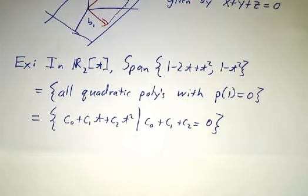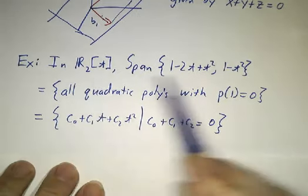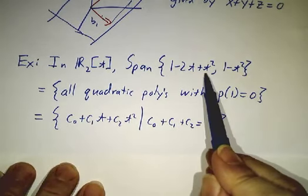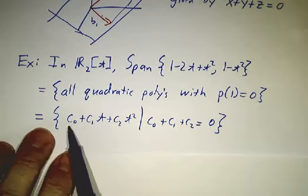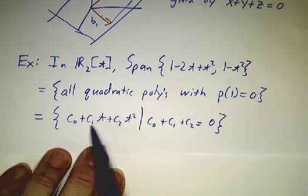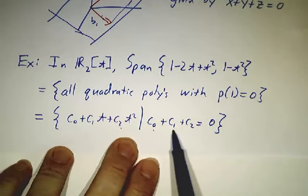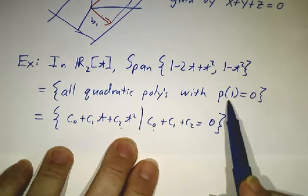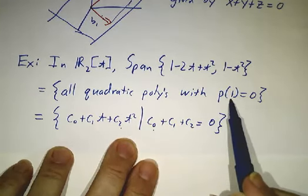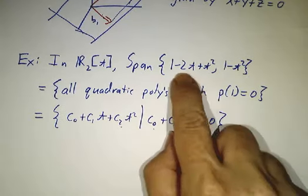We could do the same thing in an arbitrary vector space. If we looked at the space of quadratic polynomials, we might ask, what's the span of 1 - 2t + t² and 1 - t²? And it turns out to be all quadratic polynomials c₀ + c₁t + c₂t², with c₀ + c₁ + c₂ = 0. Or to put it another way, it's all quadratic polynomials that when you evaluate at t = 1, you get 0. That's a perfectly good vector space and it's the span of these two vectors.